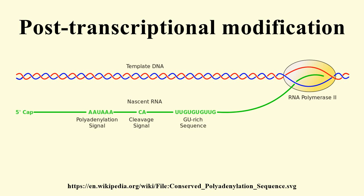5' processing and capping: The capping of the pre-mRNA involves the addition of 7-methylguanosine to the 5' end. To achieve this, the terminal 5' phosphate requires removal, which is done with the aid of a phosphatase enzyme. The enzyme guanosyl transferase then catalyses the reaction, which produces the diphosphate 5' end. The diphosphate 5' end then attacks the alpha-phosphorus atom of a GTP molecule in order to add the guanine residue in a 5'-5'-triphosphate link. The enzyme methyltransferase transfers a methyl group from S-adenosylmethionine to the guanine ring.